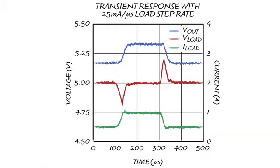On this transient response plot, we can see that cable drop compensation is also fast. Here, the output responds to a 500 milliamp load step with a 25 milliamp per microsecond step rate and settles within 50 microseconds.